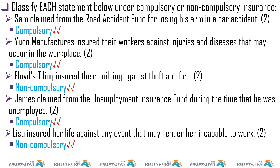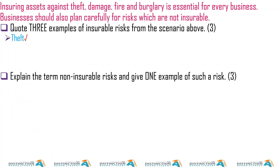She knows these things may happen, and this will be life assurance. Ensuring assets against theft, damage, fire, and burglary — number one, this is insurable risk; number two, this is non-compulsory.